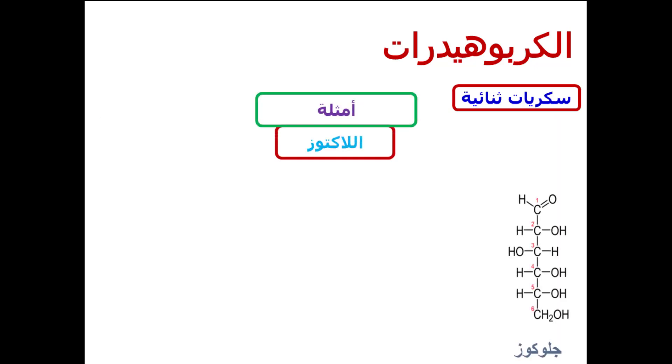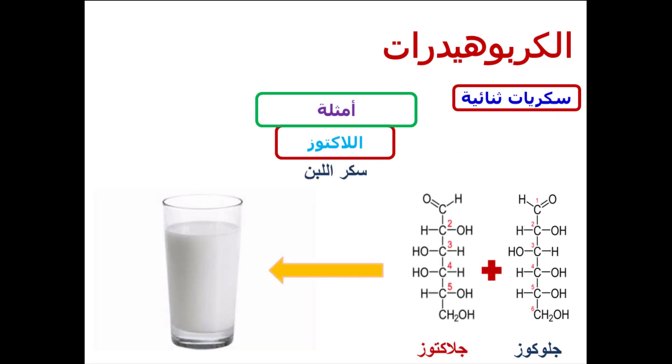النوع الثاني من السكريات البسيطة هو السكريات الثنائية. السكريات الثنائية بتتكون من جزيئين من السكريات الأحادية ترتبط مع بعض بروابط تسمى روابط جليكوسيدية، وهي روابط تربط جزيئين من السكر الأحادي لتكوين جزيء من السكر الثنائي.